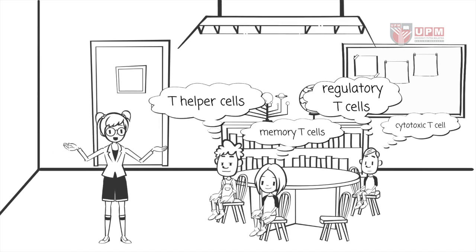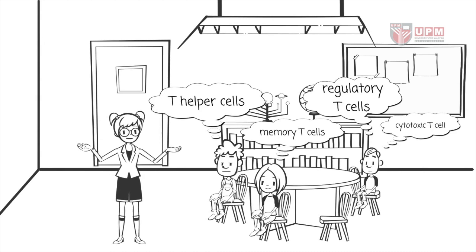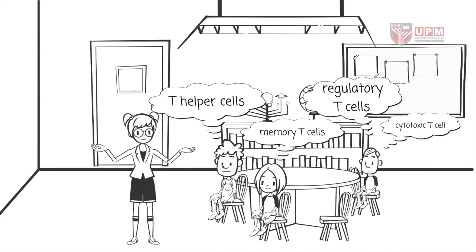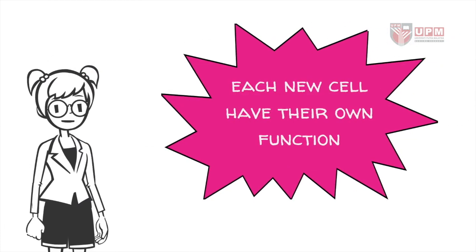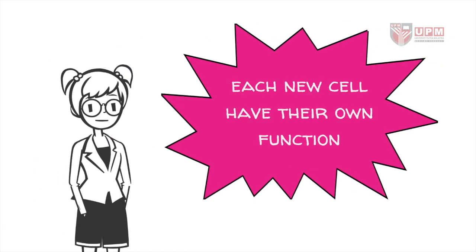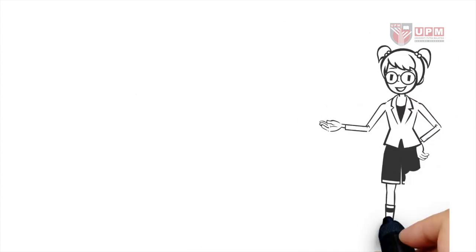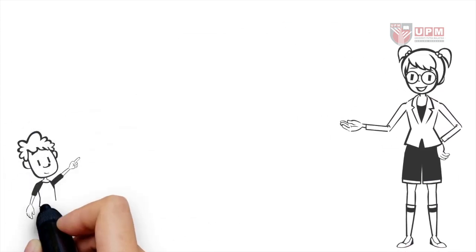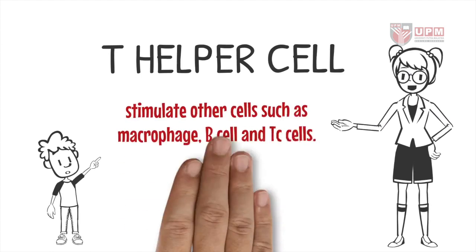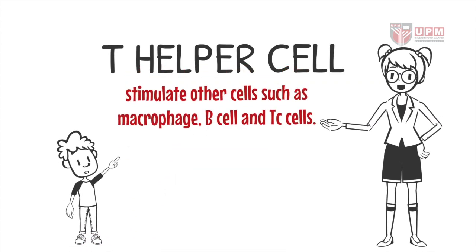T cell activation stimulates differentiation into subtypes of T-helper cells, memory T cells, regulatory T cells, and cytotoxic T cells. Each of these new cells has its own function. Let's discuss the function of T-helper cells, which stimulate other cells such as macrophages, B cells, and cytotoxic T cells.